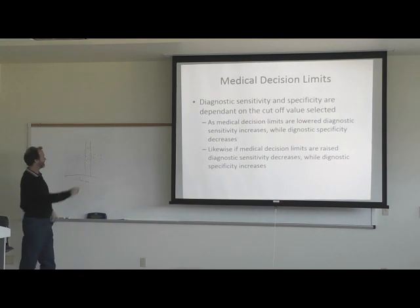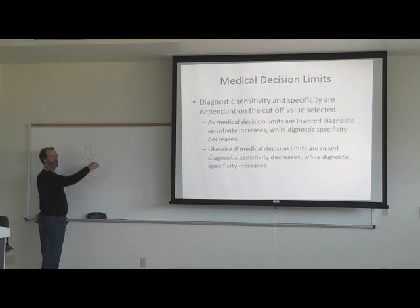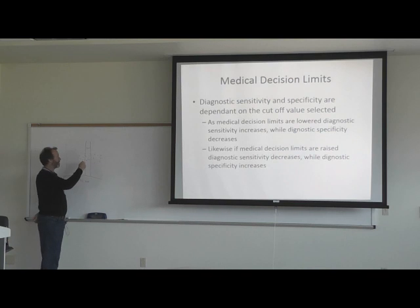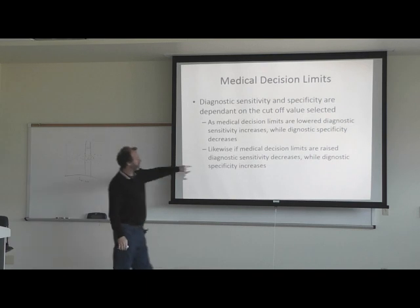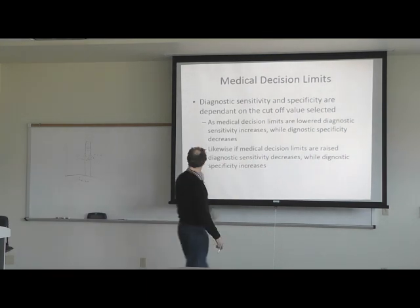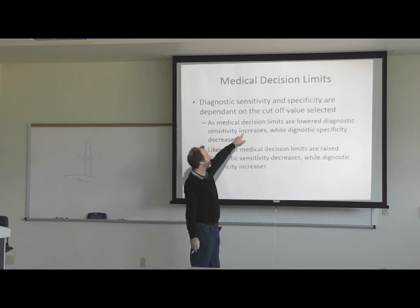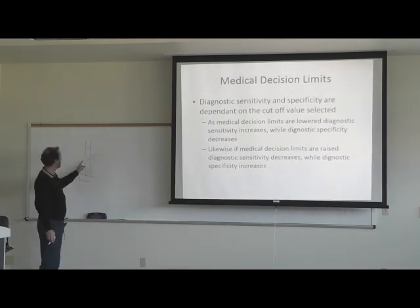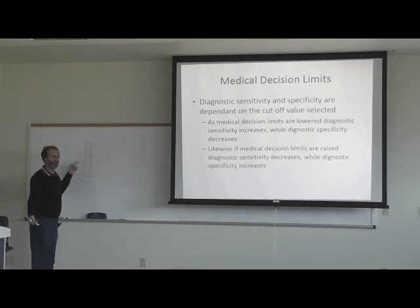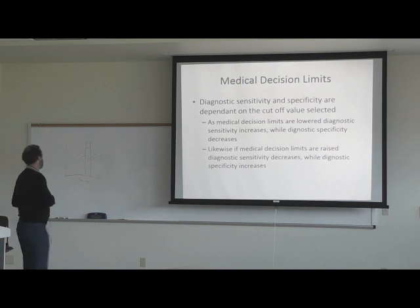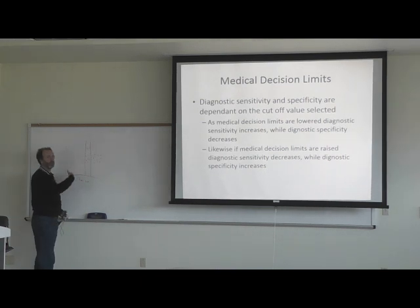If the medical decision limits are raised, sensitivity decreases but specificity increases. Where I drew this line, it's extremely specific — if you test positive, you have the disease; if you test negative, you might not have it. Whereas here, where I drew this lower line, everybody above the line has the disease, but there's a bunch of false positives. So sensitivity increases but it's not so specific — if you test above it you might have the disease, but if you test below it you definitely don't.